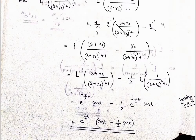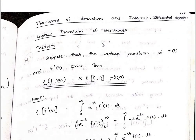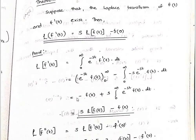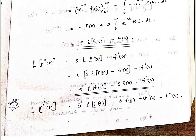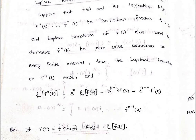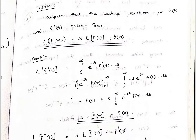Transform of Derivatives and Integrals — Differential Equations. Linear Transform of Derivatives Theorem: Suppose that the Laplace transform of f of t and f dash of t exists. Then L of f dash of t equals s times L of f of t minus f of 0. Then L of f double dash of t and L of f triple dash of t — in general the equation is as follows.